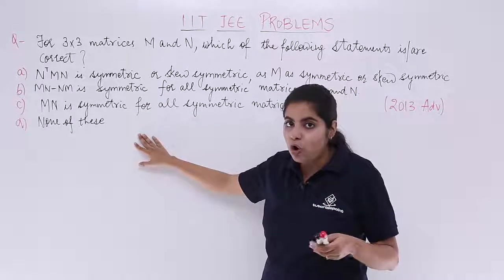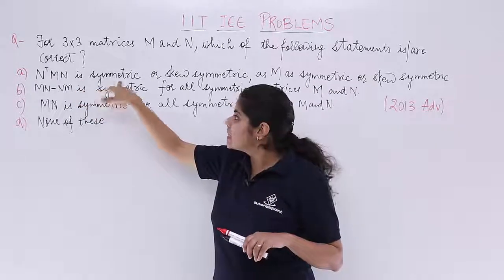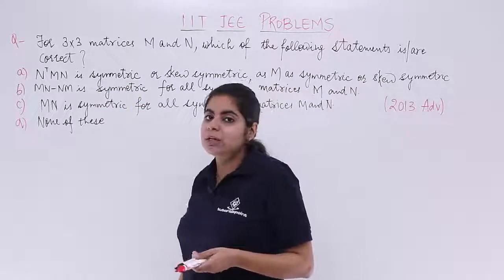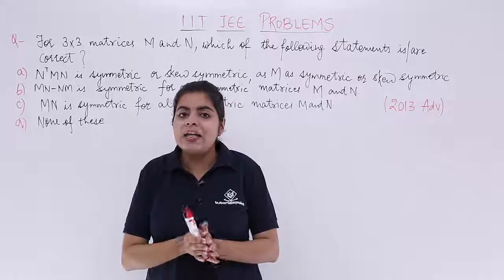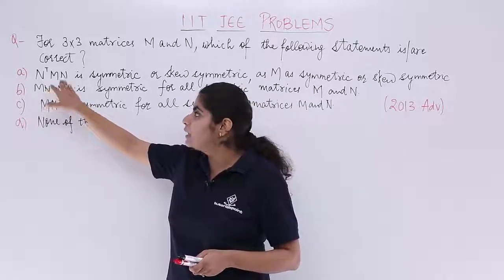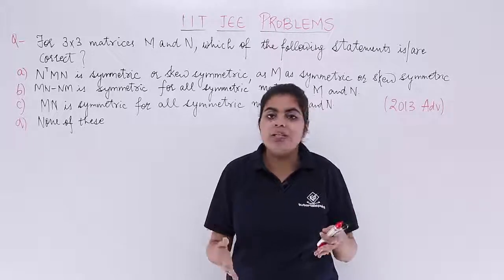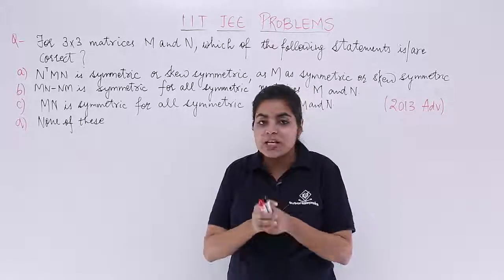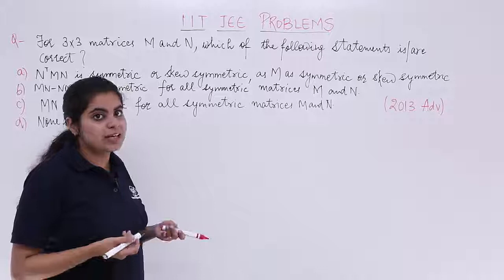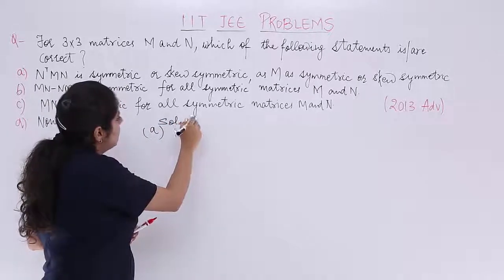We'll take into consideration all the options one by one. The first says that N transpose MN is symmetric or skew symmetric as M is symmetric or skew symmetric. We have already done this question and this type of question has been done wherein we saw that we have something transpose other into that same thing. For these questions, we take the transpose. Let's get started by taking the transpose for option number A.